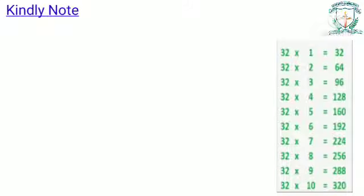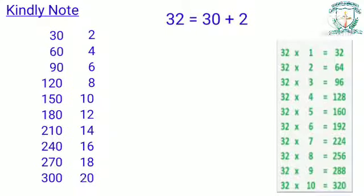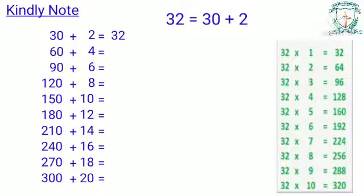Dear children, kindly note: when we have to write the multiplication table of a two-digit number greater than 20, we split the number and write the tables. For example, 32 is split as 30 plus 2. Write the table of 30 and the table of 2, then find their sum to get the table of 32.